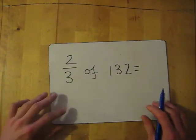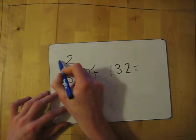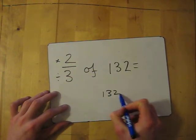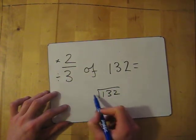Let's have another go. 2 thirds of 132. So divided by the bottom, times by the top. So 132 divided by the bottom, which is 3.